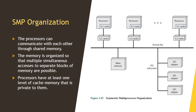Memory is often organized so that multiple simultaneous accesses to separate blocks are possible. Memory is divided into modules — two different processors can access two different memory modules to retrieve two different words of data at the same time. Modern processors generally have at least one level of private cache memory; the use of cache bridges the speed gap between processor and memory, improving performance.